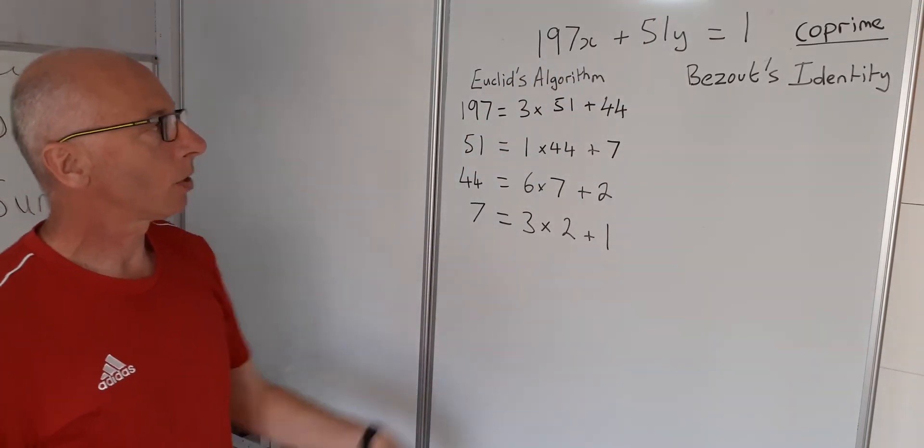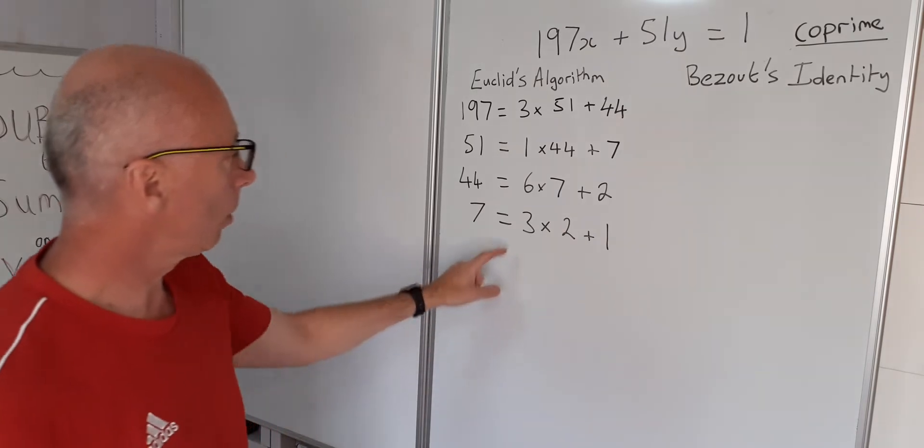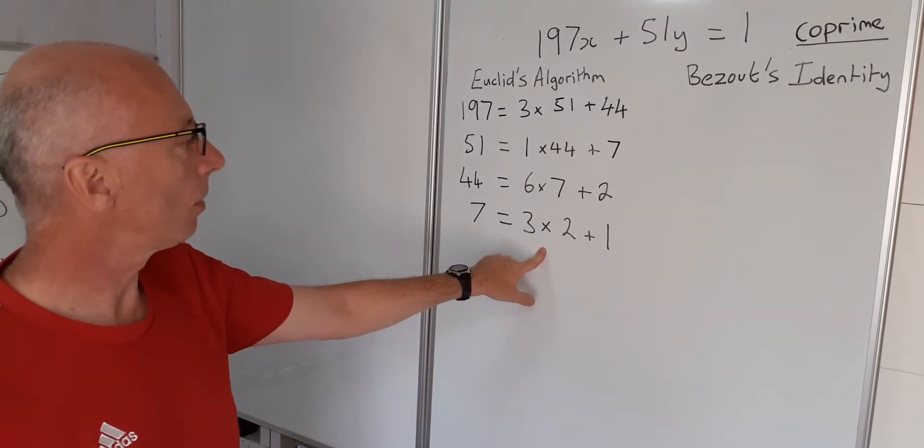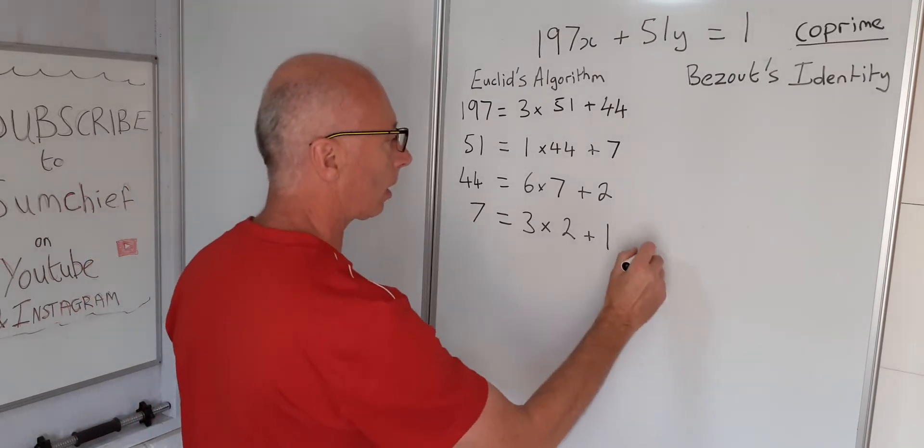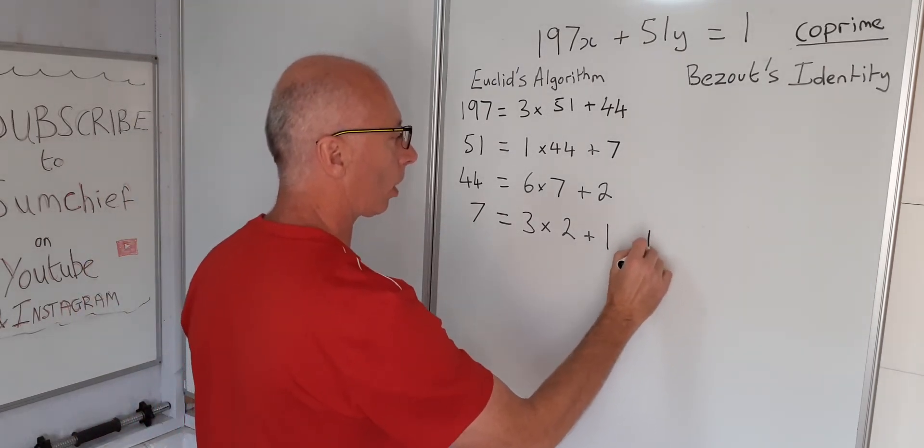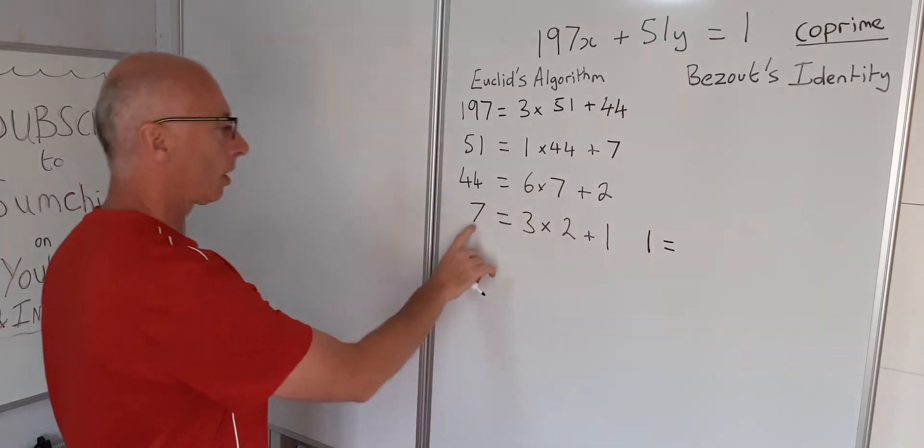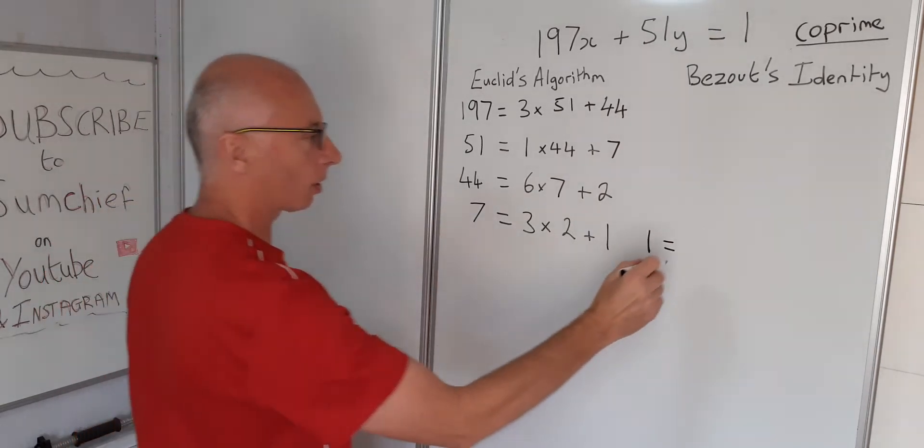So now for the Bezout's identity. So what we do is we take this and find the reverse. So instead of having the remainder at the back, we say that the remainder equals. So 1 equals 7 minus 3 times 2.